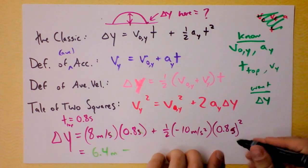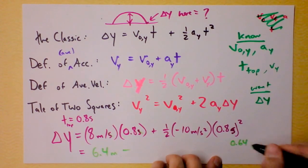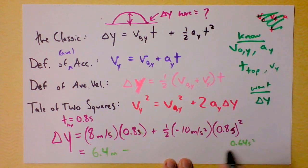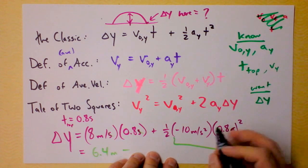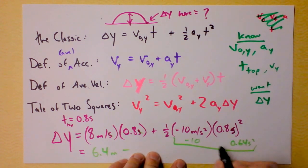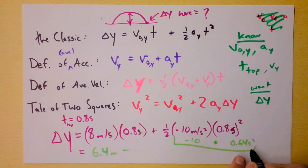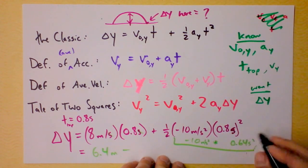This is 0.64 seconds squared. And then I'm supposed to multiply that by 10, so I think I get negative 6.4. That's very interesting. I get negative 10 times 0.64, so I'm going to get 6.4 meters again. This is meters per second squared.